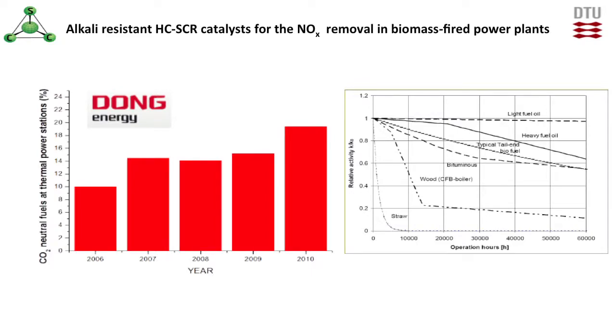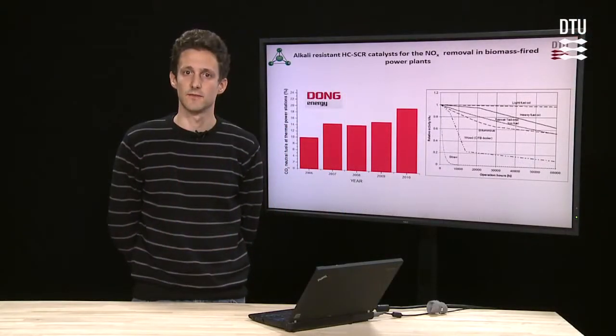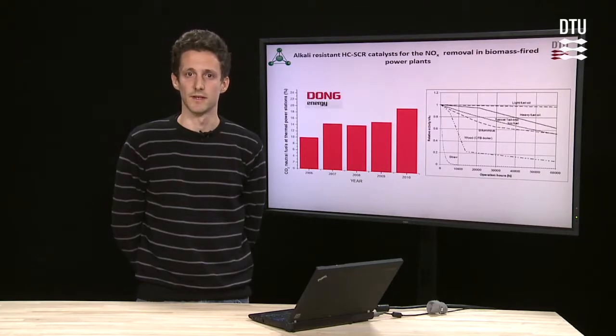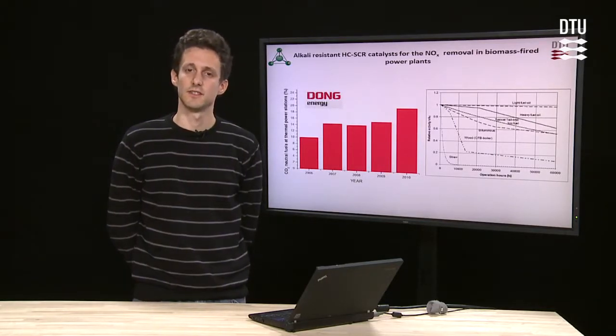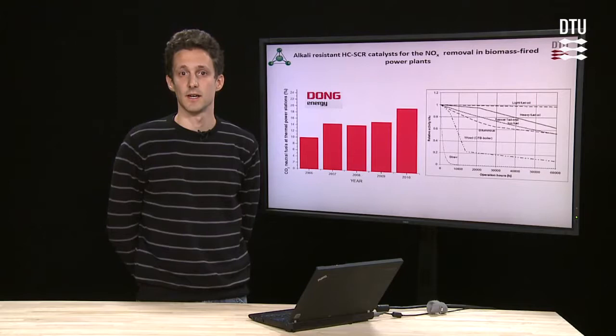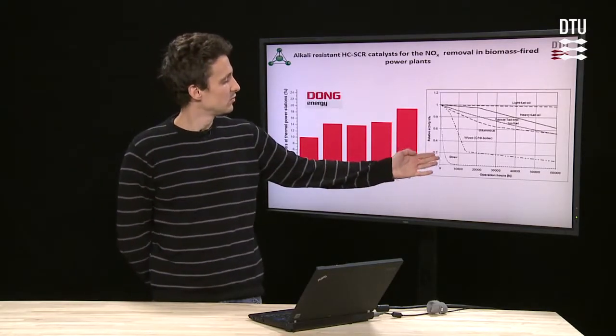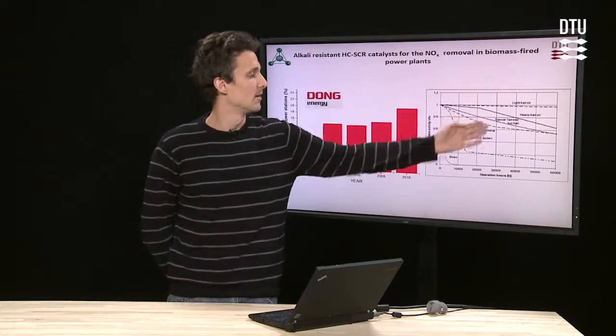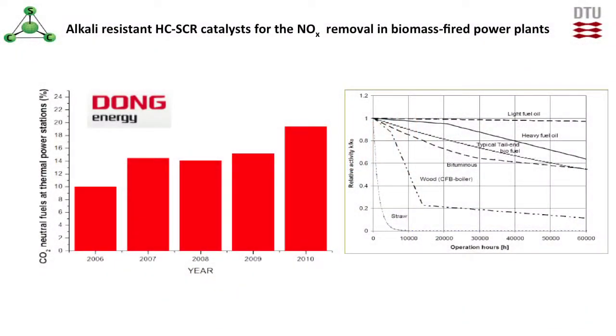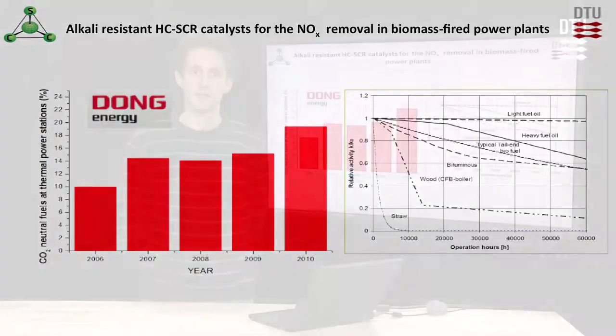However, firing and co-firing of biomass leads to severe technical difficulties at the power plants. One of these difficulties is the deactivation of the SCR catalyst which is used to remove NOx gases. As we can see in this graph, using straw and wood instead of fossil fuels leads to much faster deactivation of the SCR catalyst.